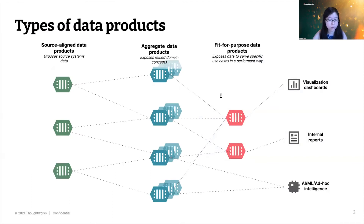Let's do a quick recap on the types of data products we often see. On the far left, we have source-aligned data products that typically expose data from source systems in a way that is close to how the source system represents data — not a lot of loss of fidelity, if any. On the far right, we have fit-for-purpose data products, which expose data modeled to serve a specific use case, typically in a performant way.